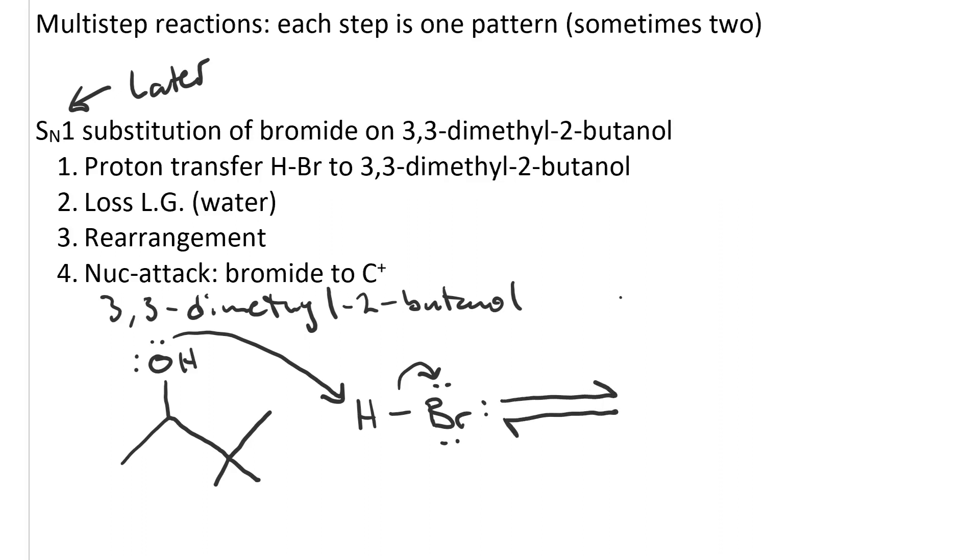There is our first step, proton transfer. It uses two curved arrows, and it transfers a proton from the acid to the base, giving us a protonated alcohol.